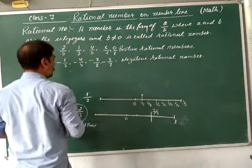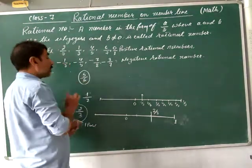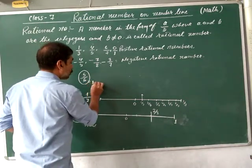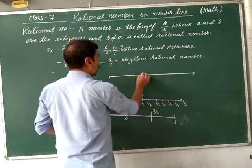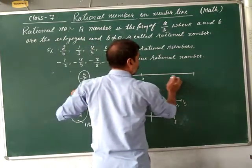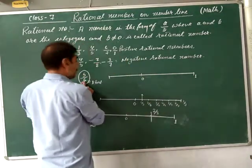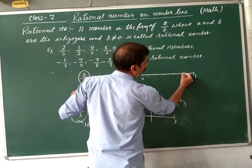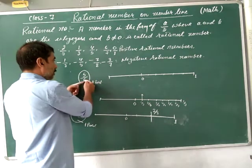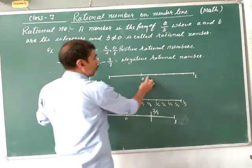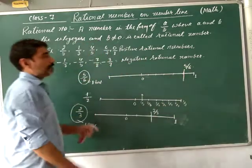Now represent 5 by 6 on the number line. This is also a proper fraction, so take 1 unit. Draw the number line starting at 0. Divide the unit into 6 equal parts: 1, 2, 3, 4, 5, 6. Since we need 5 out of 6, count 5 parts. This point represents 5 by 6 on the number line.